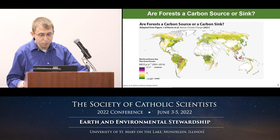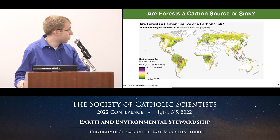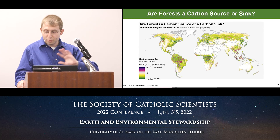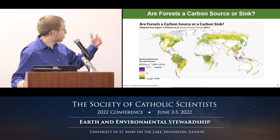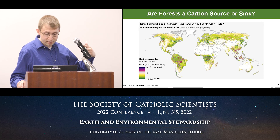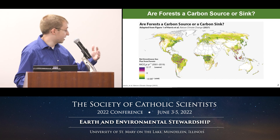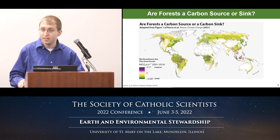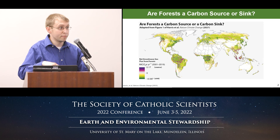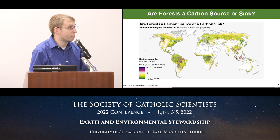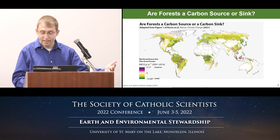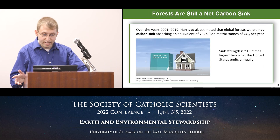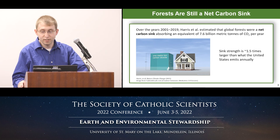Folks have also been looking at whether or not forests are a carbon source or a carbon sink. This figure is taken from a paper published in Nature Climate Change last year, looking at particular forests of the world and seeing whether they're a source of greenhouse gases or a sink. Green represents a sink, but areas like the Amazon, the Congo, or Southeast Asia are more purple, showing a source of greenhouse gases — due to deforestation or biomass burning. The paper found that over the past two decades forests are still a net carbon sink, thankfully.